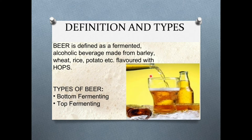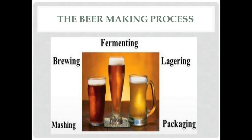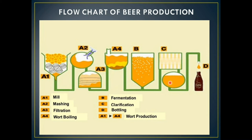This is how beer looks. Let's move further to the beer making process. There are seven major processes: mill, mash, lauter tun, brew kettle, fermentation tank, filter, conditioning tank, and pasteurizer. The basic overview includes fermenting, brewing, mashing, and packaging.